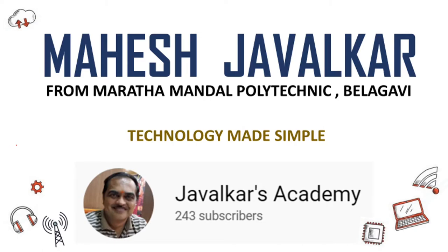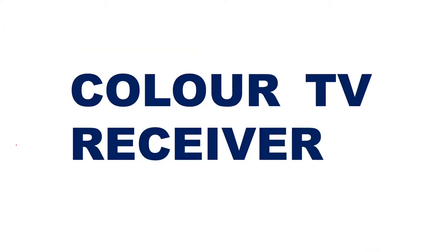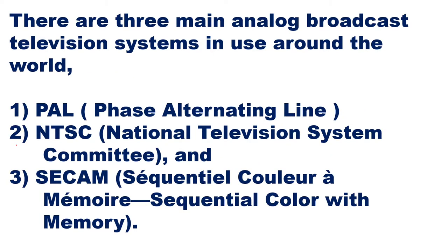Today we will see what we mean by Color TV Reception. There are three color TV systems used all over the world: PAL (Phase Alternating Line), NTSC (National Television System Committee), and SECAM (Sequential Color with Memory). Out of these three, in our country India, we use PAL, that is the Phase Alternating Line system.